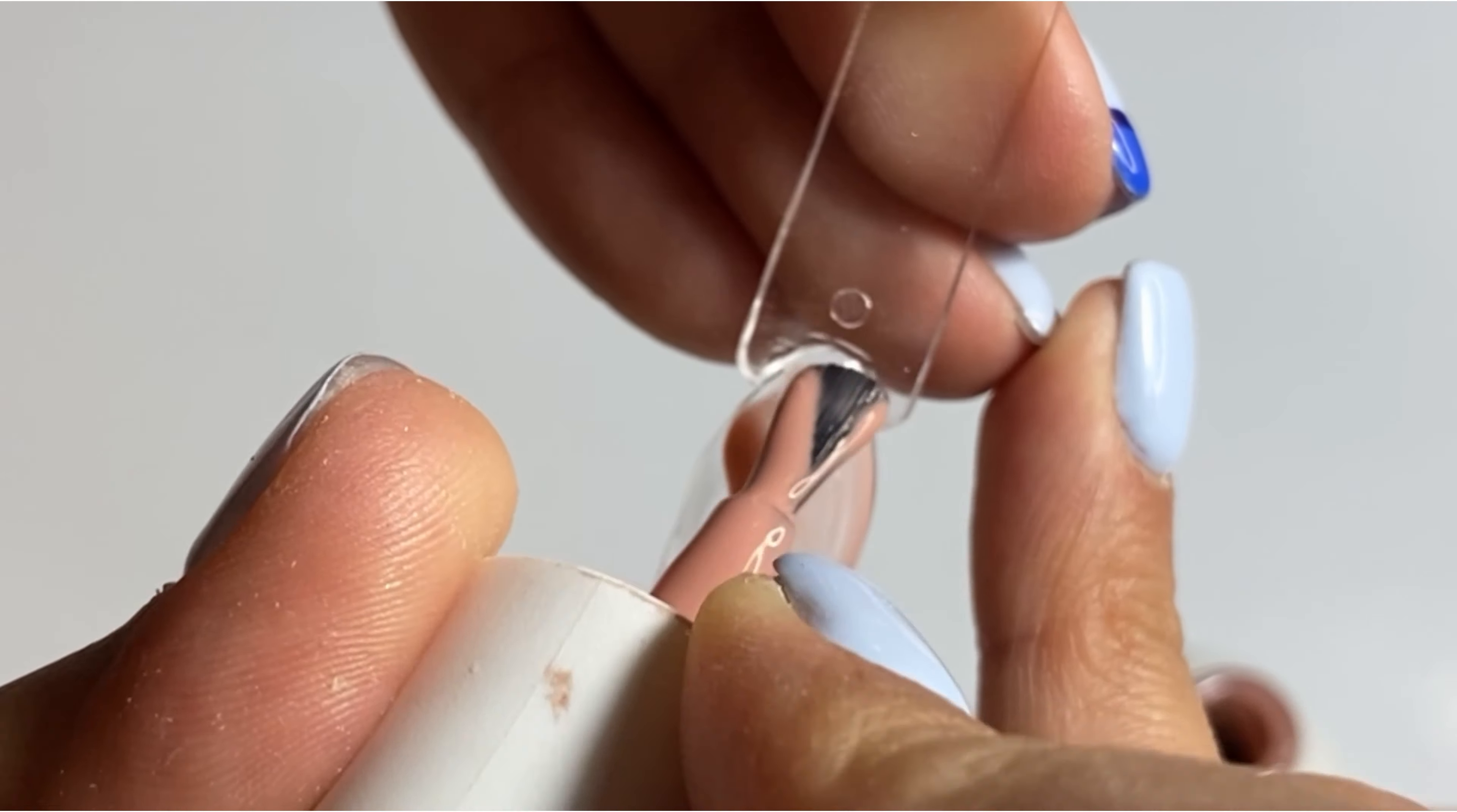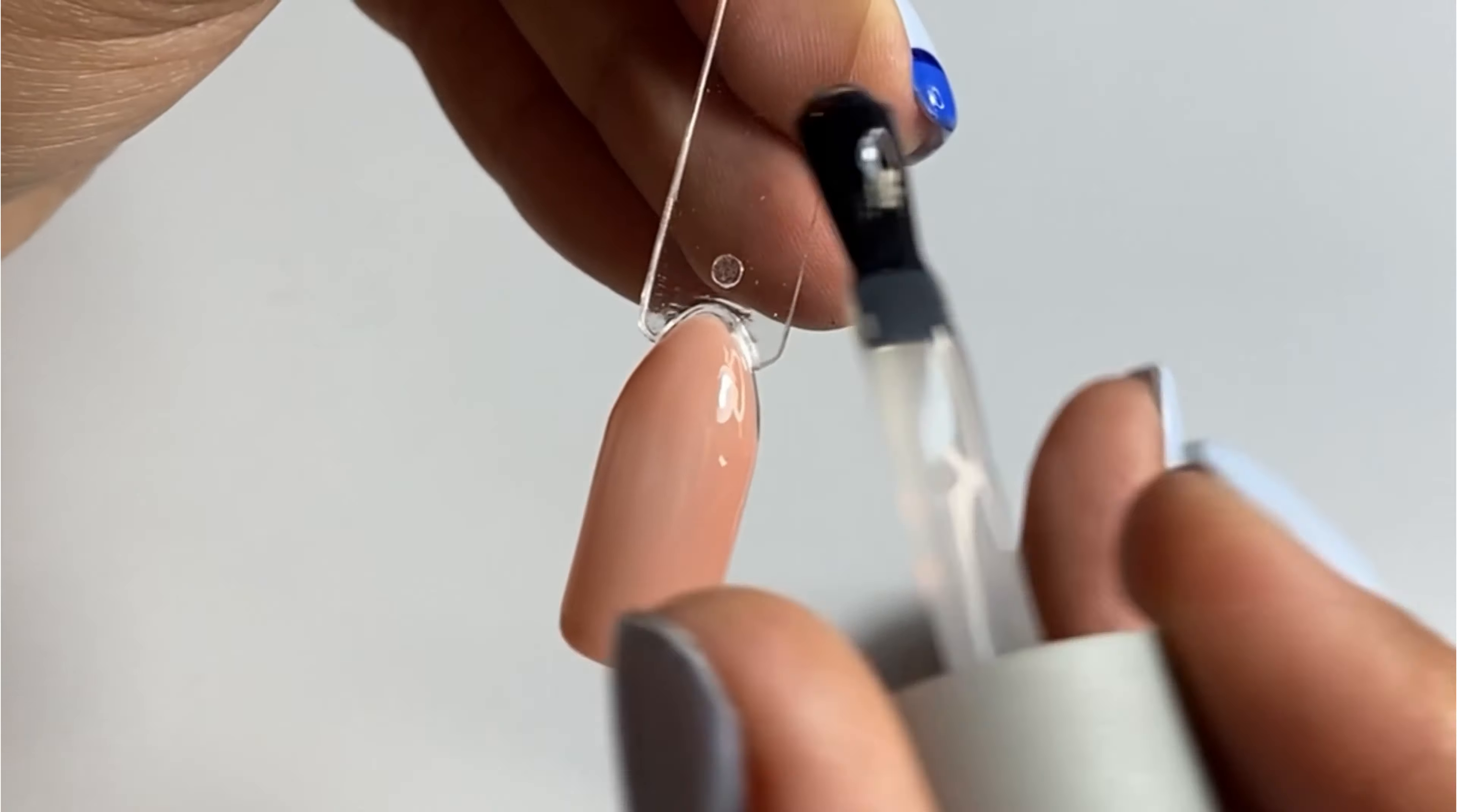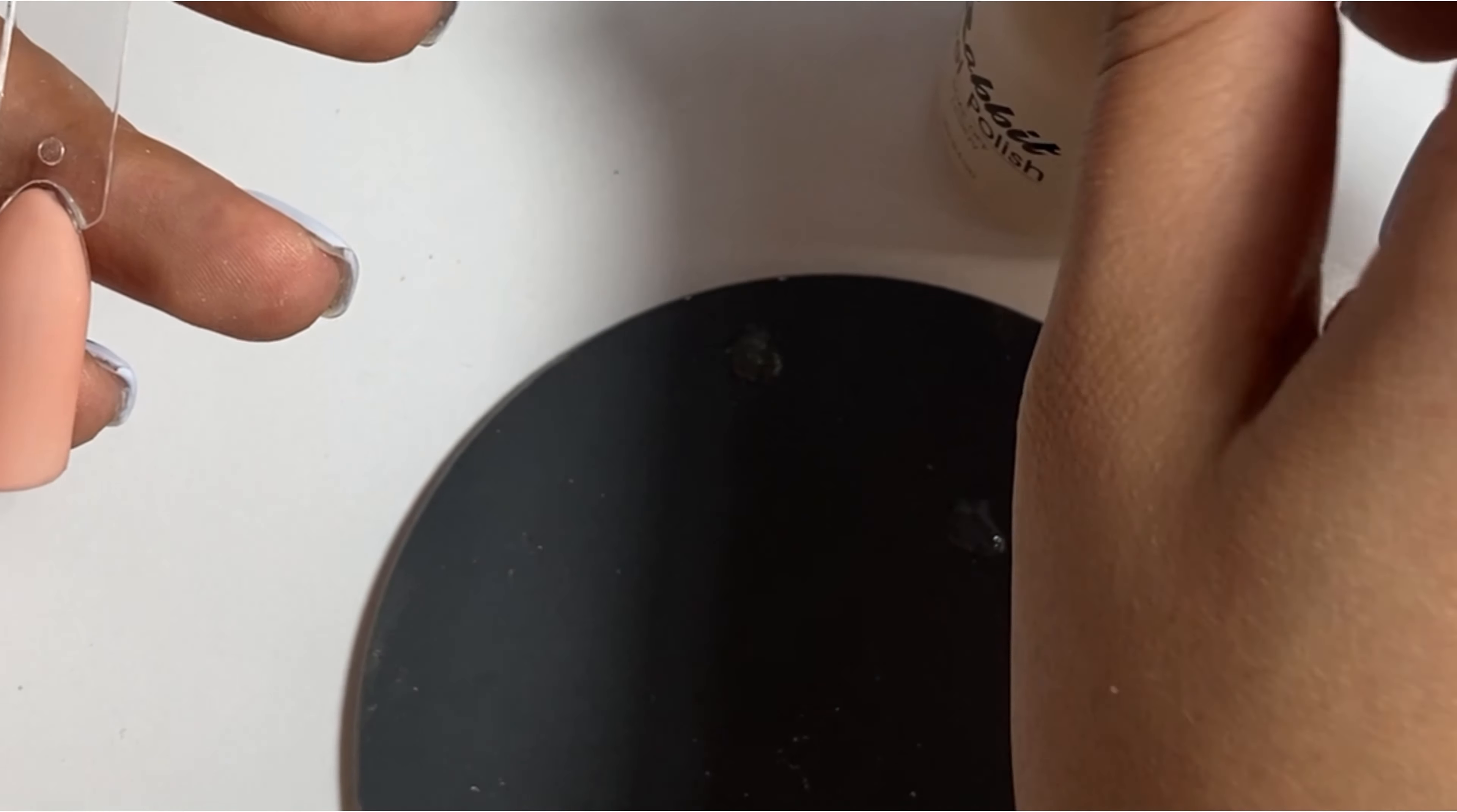At first, polish the first layer of your gel polish and put it in UV. Then polish the second layer again and put it in UV. Then polish your top coat and let it dry in UV.